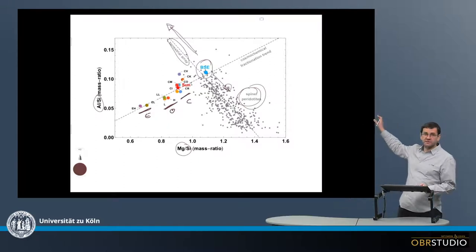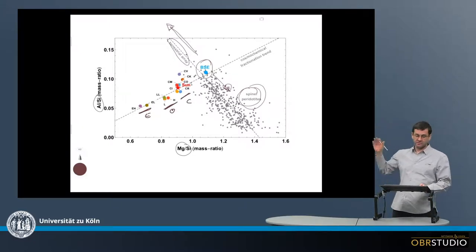And there's also this kind of succession here from enstatite ordinary to carbonaceous chondrites. So again, these form some sort of correlation line.